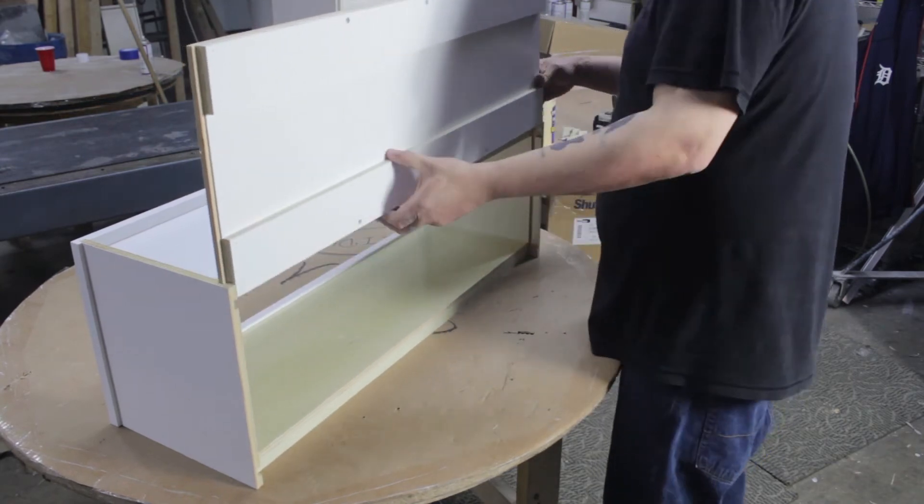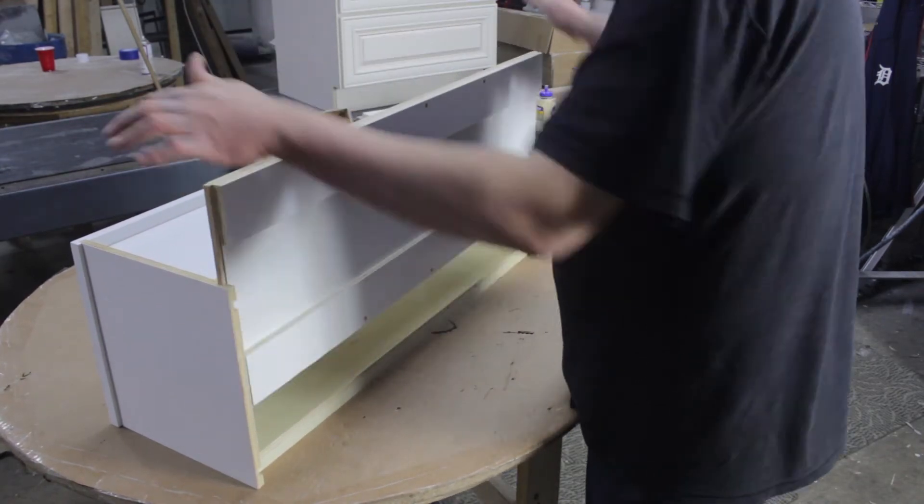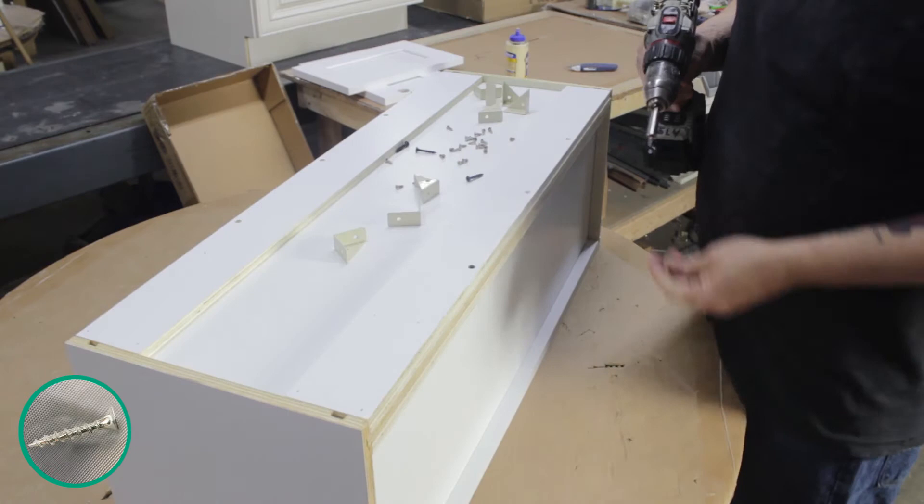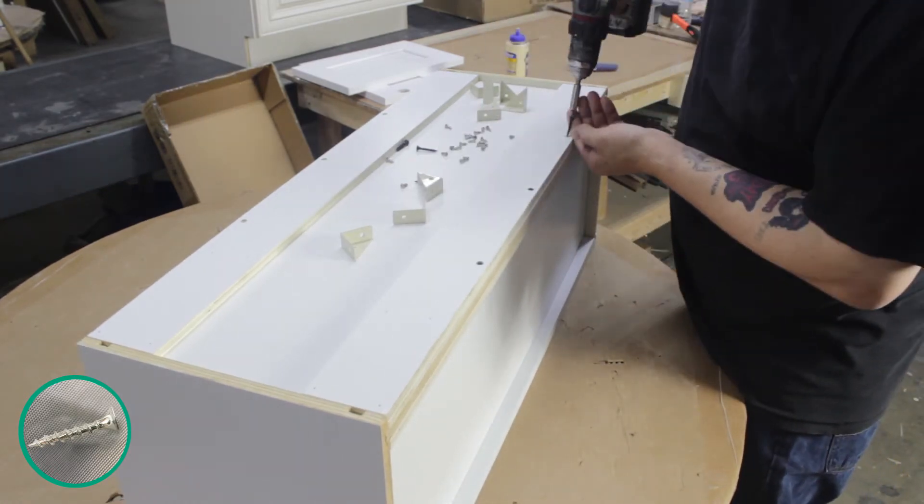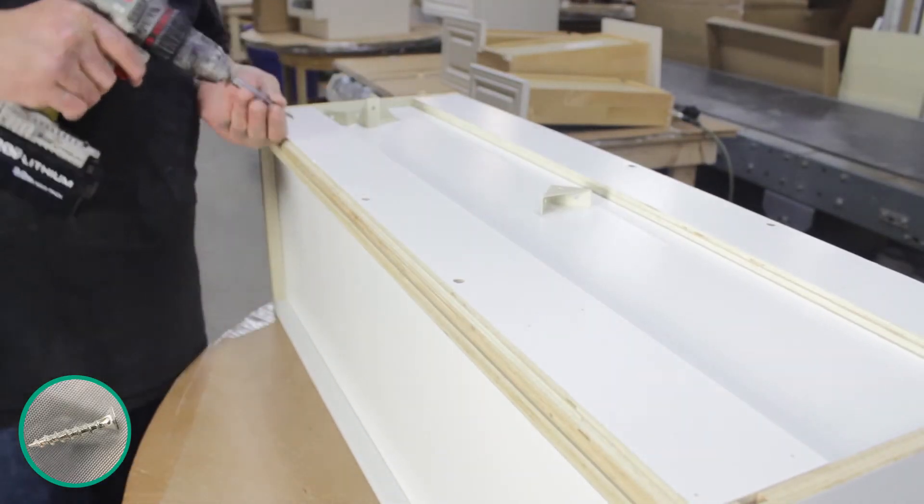Flip the cabinet upright and slide the back wall into place using the grooves on the cabinet walls. Turn the cabinet onto its front and use pre-existing holes to secure the back of the cabinet to the top and bottom lips.